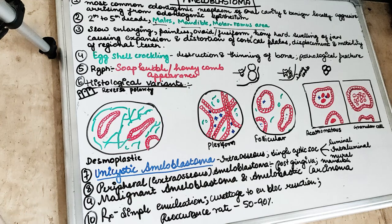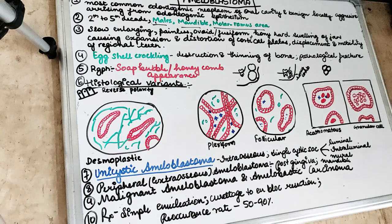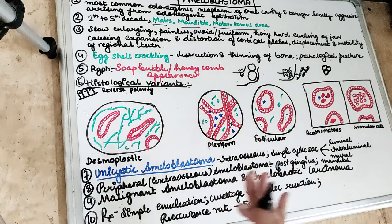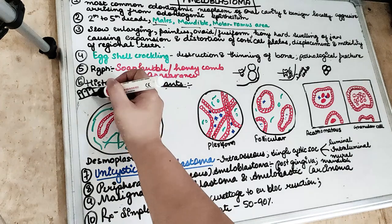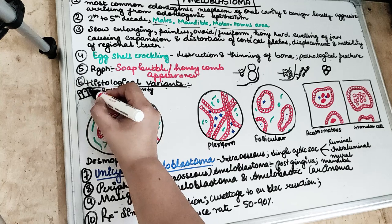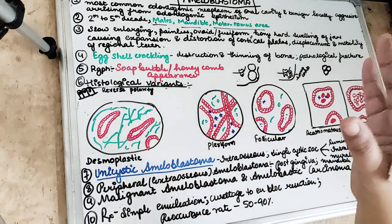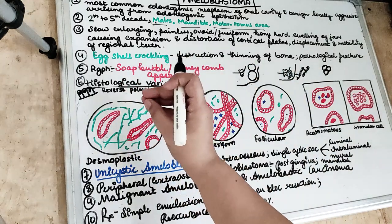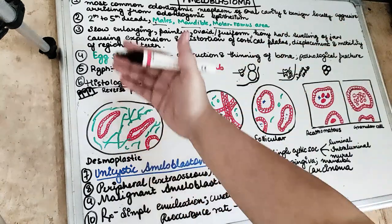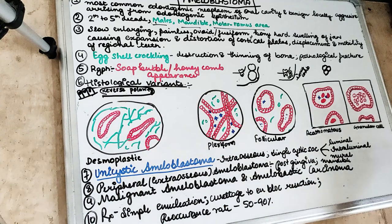Looking at histological sections, the histological types are granular, desmoplastic, follicular, acanthomatous, and plexiform. The common feature in all histological types is reverse polarization — the nucleus is positioned away from the basement membrane. We can also see hyperchromatism of the basal cell nuclei and palisading of these basal cells, along with cytoplasmic vacuolization of the basal cells toward the basement membrane.